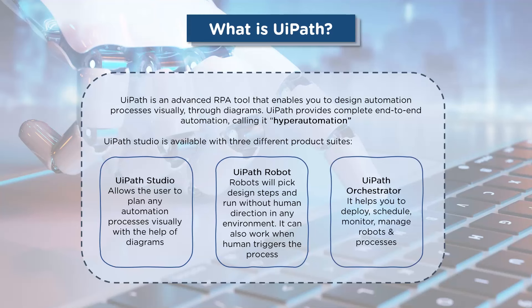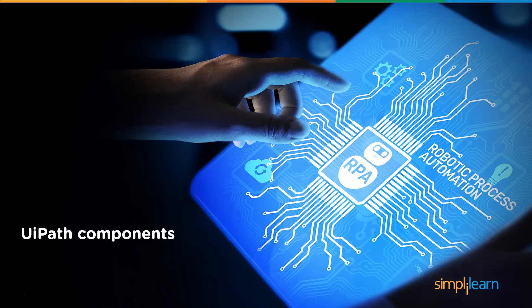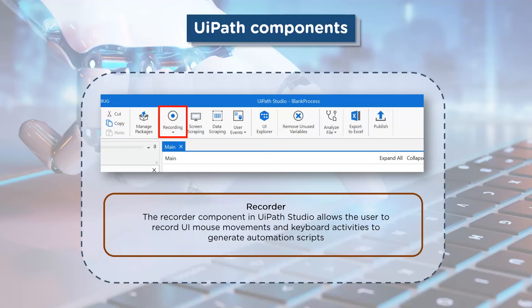The third product suite is the Orchestrator — a centralized robot management dashboard where you can easily deploy, secure, and manage UiPath robots at scale. Here is the course of action: the user creates a bot, saves the project as a process, and that process is assigned to a specific robot to execute it. This collectively constitutes a job, all of which is managed by the UiPath Orchestrator.